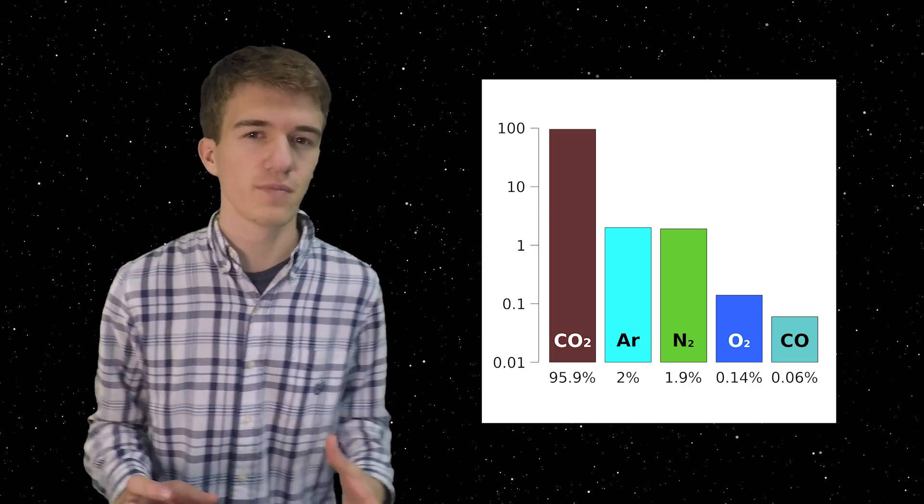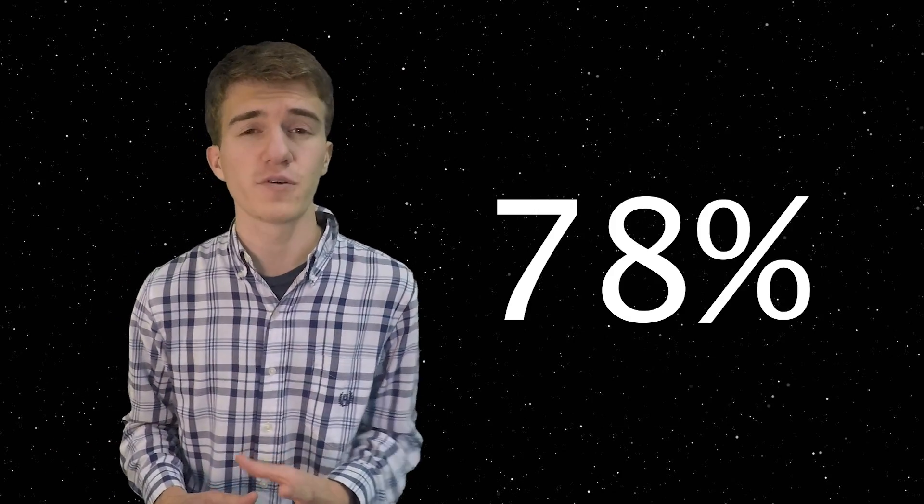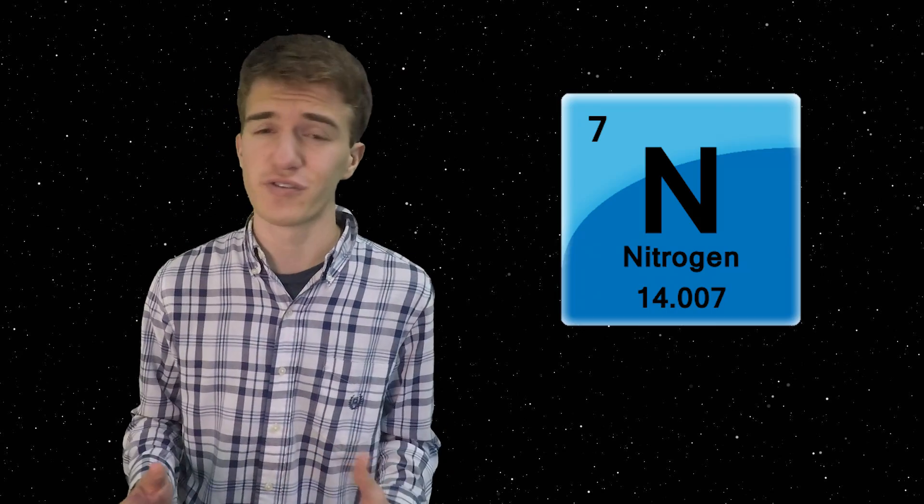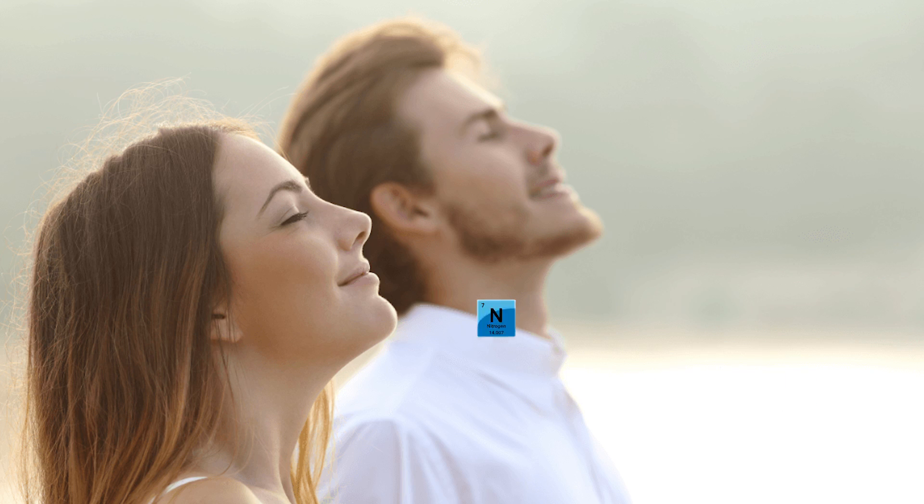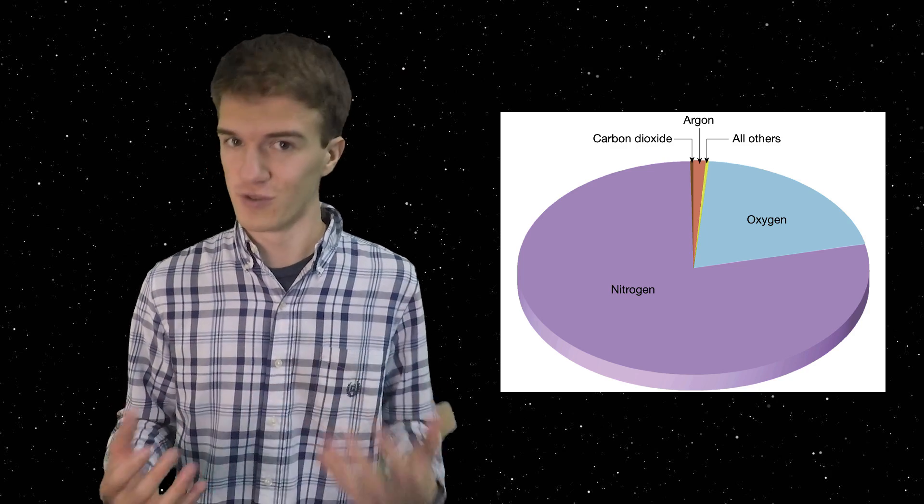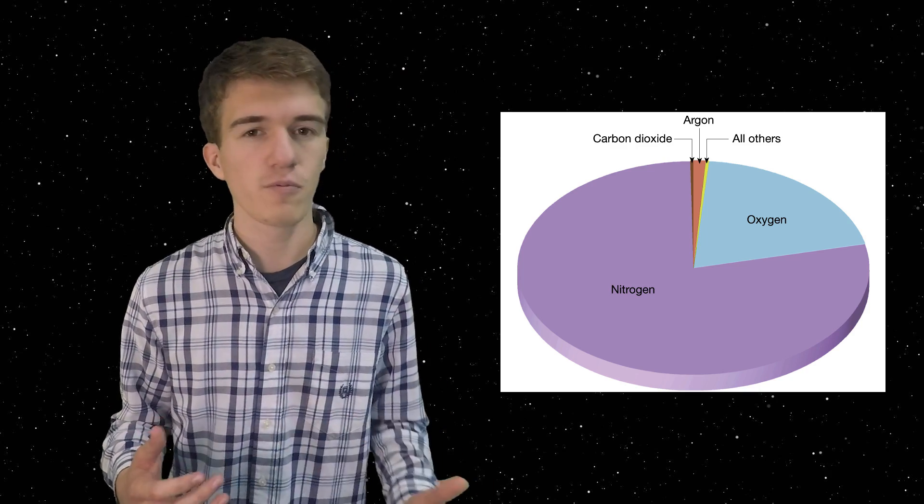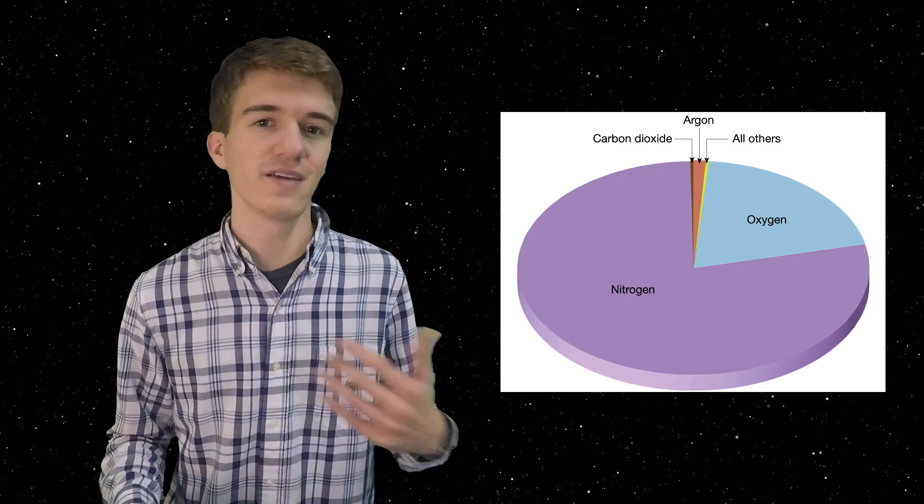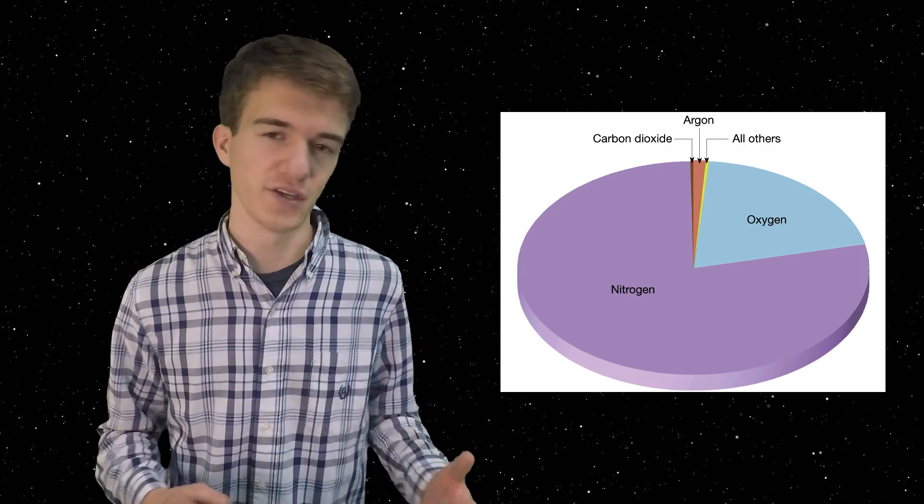Now, here on Earth, it's a little bit different. About 78% of Earth's atmosphere is actually nitrogen. So the area you're breathing right now is mostly nitrogen. 20% of that is oxygen, which is what we need. And then just a couple percent are argon, and even less is carbon dioxide, and so on and so forth.